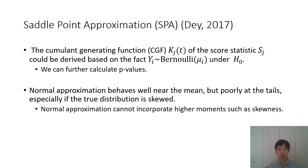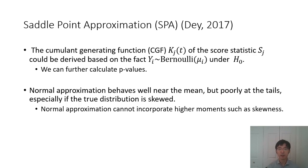Here is a brief introduction of saddlepoint approximation. Normal approximation can generally perform well near the mean, but poorly at the tails, especially if the true distribution is very skewed. This is because normal approximation only incorporates the first and second moments — mean and variance — and it cannot incorporate higher moments such as skewness. However, the cumulant generating function (CGF) is a one-to-one mapping to the distribution, which essentially incorporates all moments. Saddlepoint approximation is based on this CGF, which can be derived based on the fact that Y follows a Bernoulli distribution under the null, and from that we can further calculate p-values through the SPA approach.